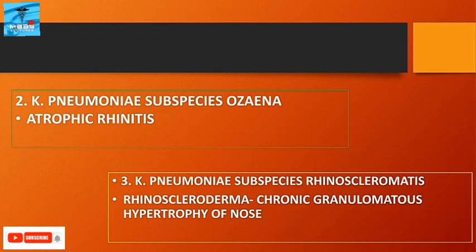Third is Klebsiella pneumoniae subspecies rhinoscleromatis. It causes rhinoscleroma, a condition in which chronic granulomatous hypertrophy of the nose occurs.